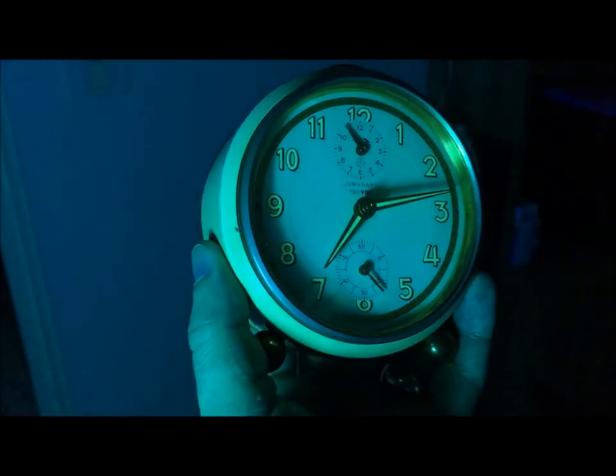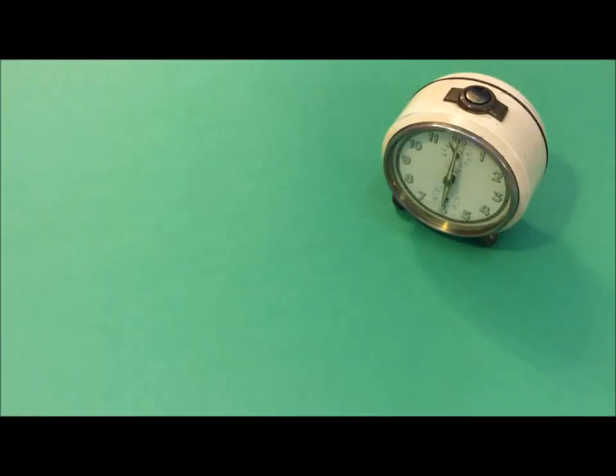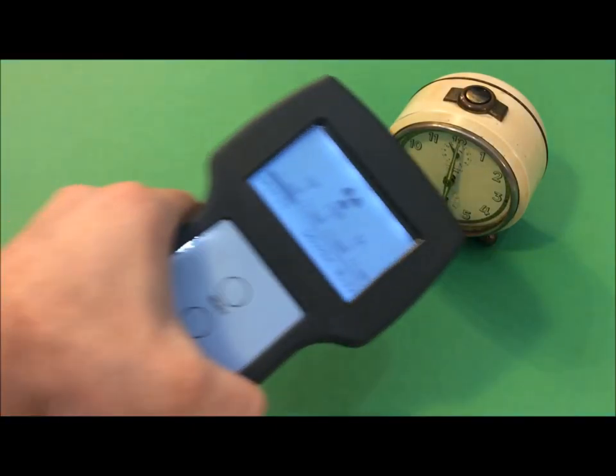The phosphor degrades relatively fast and the dials lose luminosity in several years to a few decades. Clocks and other devices available from antique shops and other sources therefore are not luminous anymore.